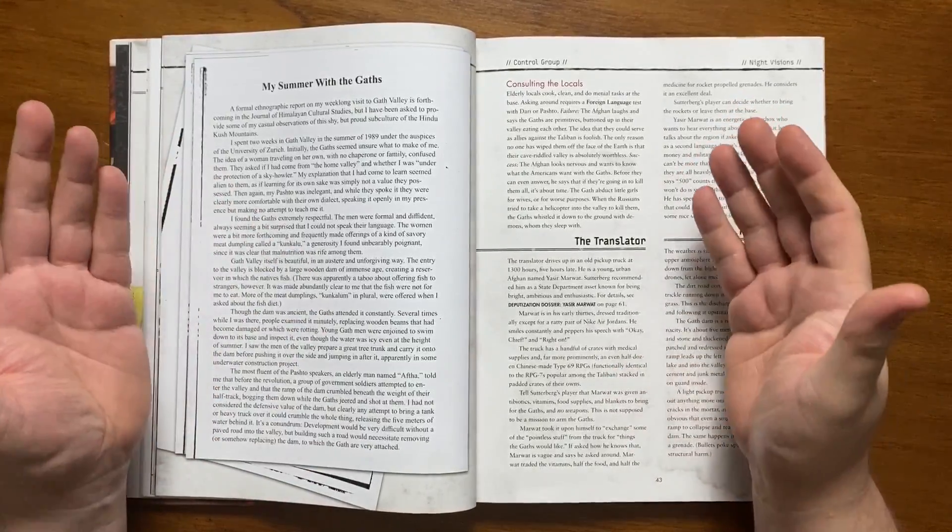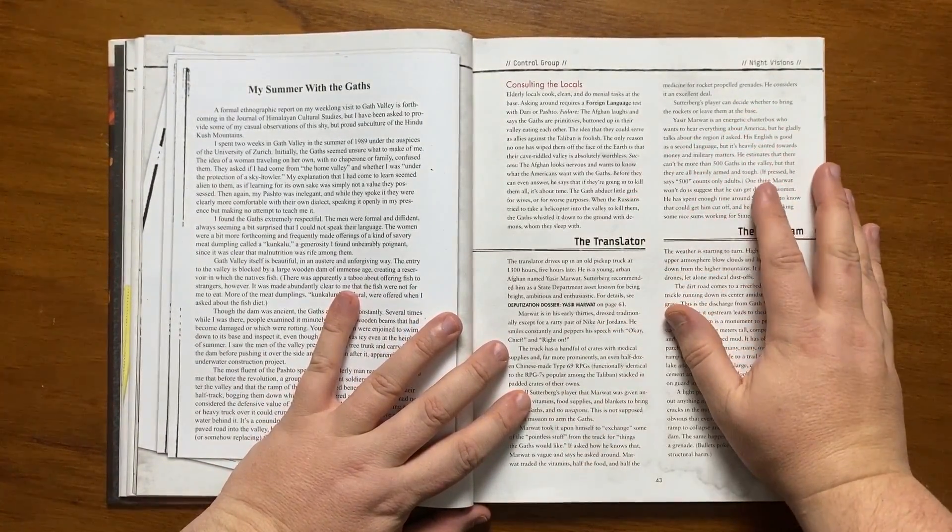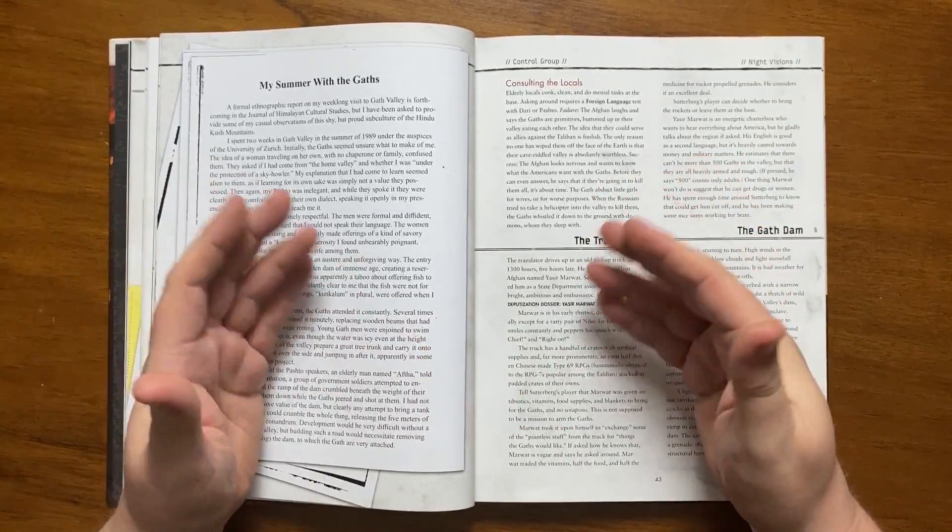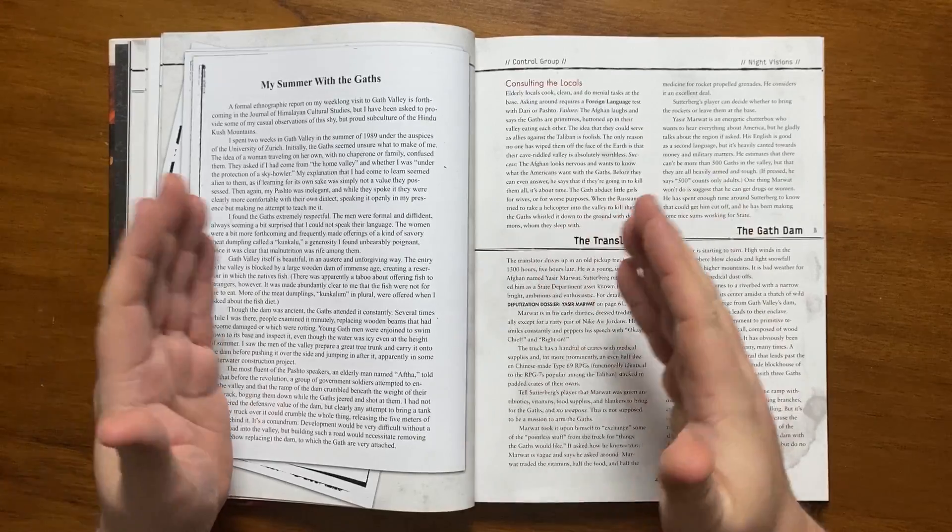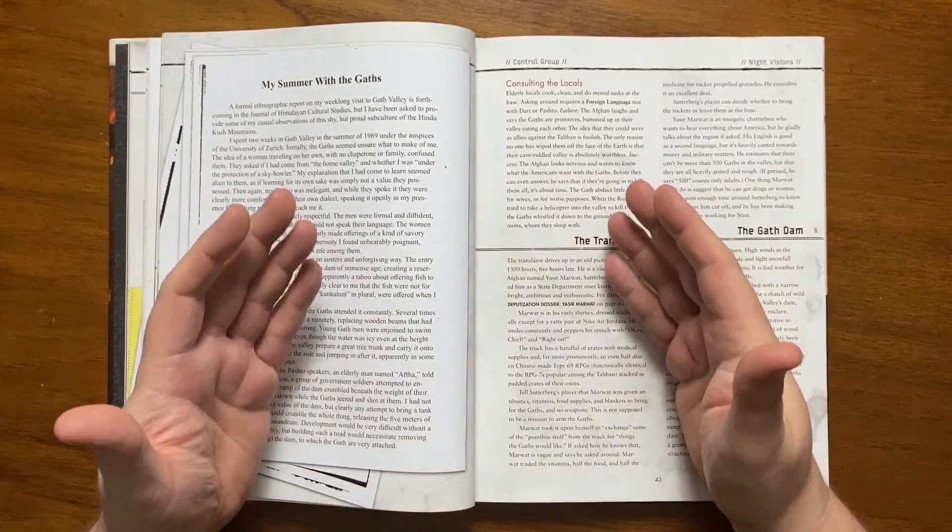The valley is described as beautiful yet austere. The valley is dammed, creating a fishing lake at the entrance, and that the Gaths were constantly examining and repairing it. The author spoke of an old man called Aftha who told her that, before the revolution, a group of government soldiers tried to enter the valley, but the dam crumbled under the weight of their vehicle.